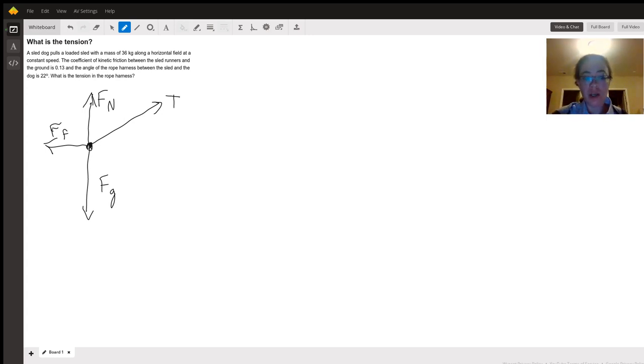We know that the sled is in equilibrium because it's moving at a constant velocity. This is a two-dimensional problem, so we're going to have two equilibrium conditions: equilibrium along the x-axis and equilibrium along the y-axis. In order to evaluate those, we're going to have to decompose T.